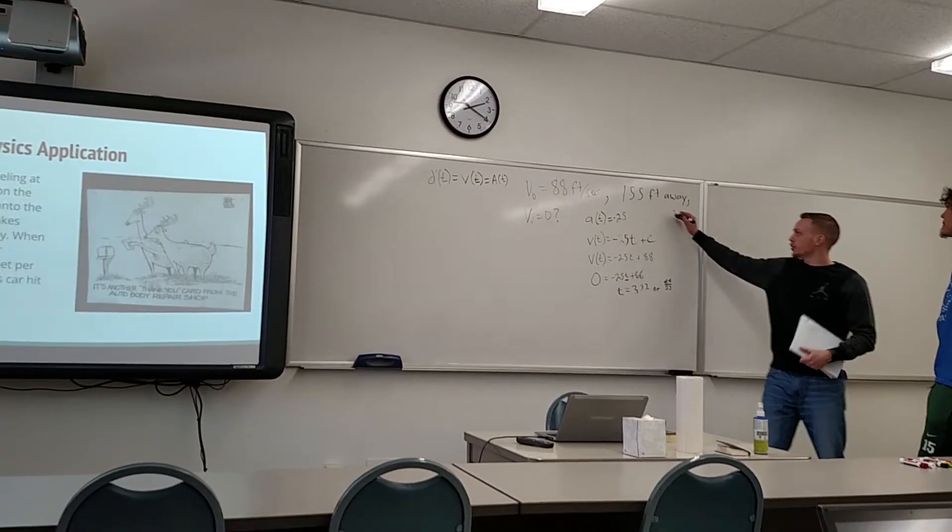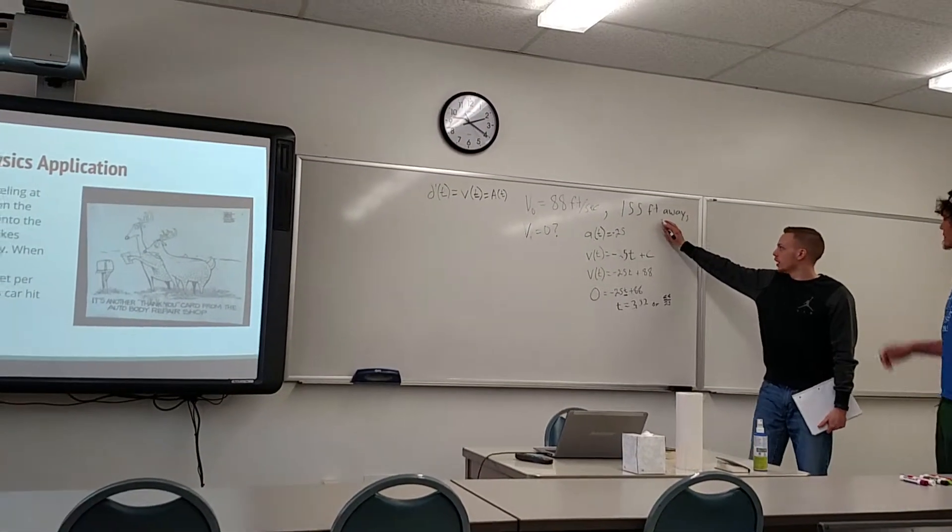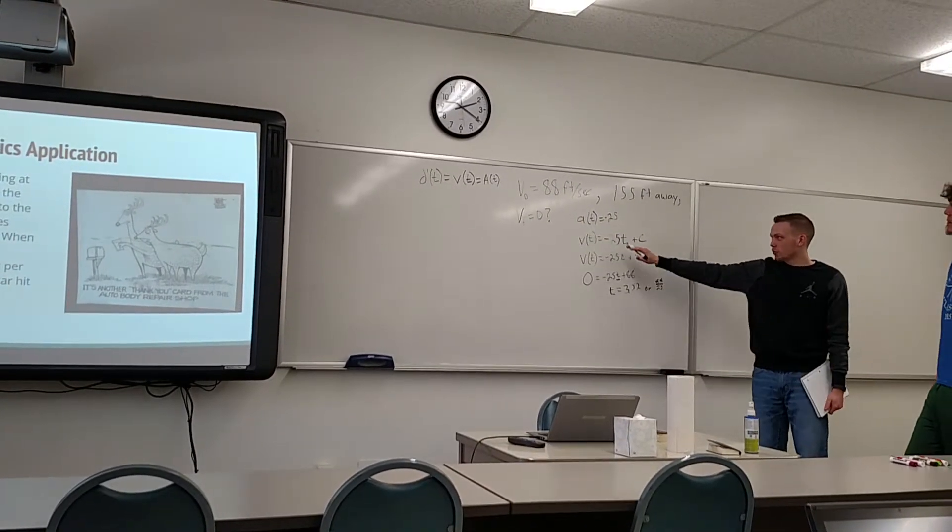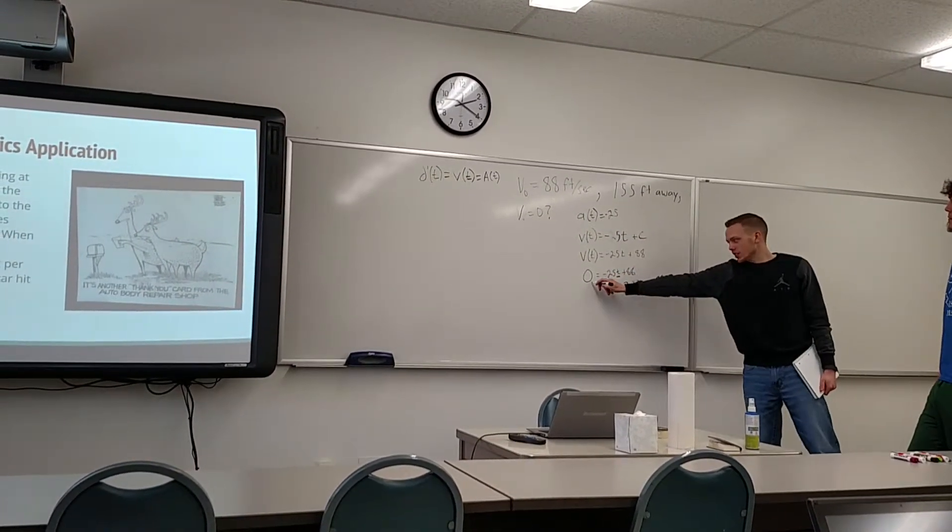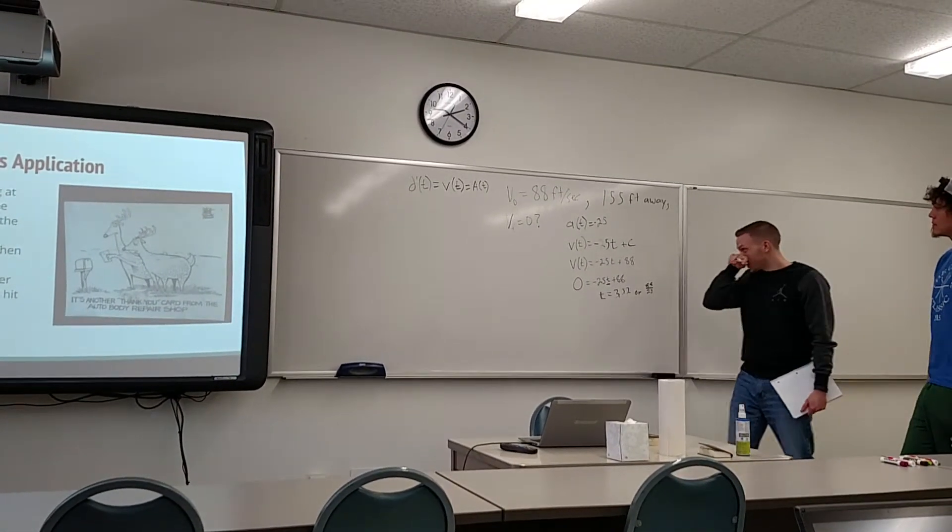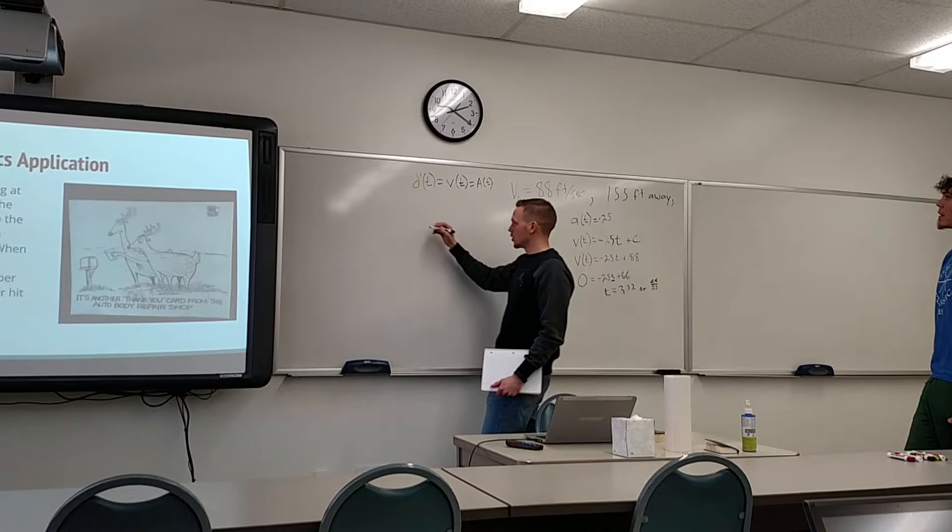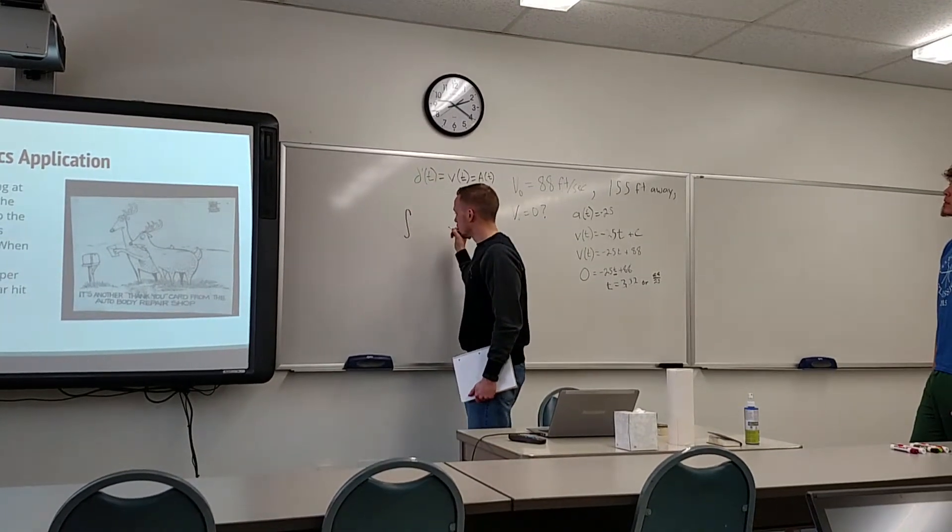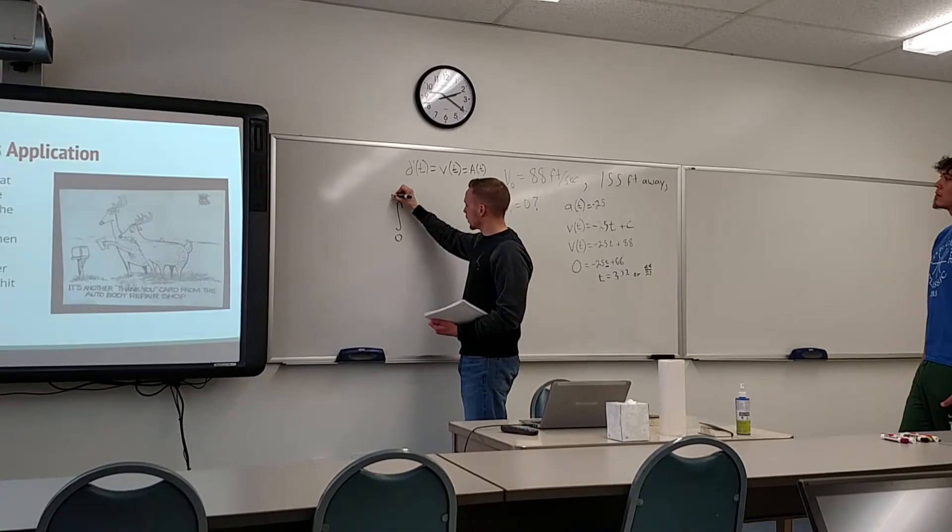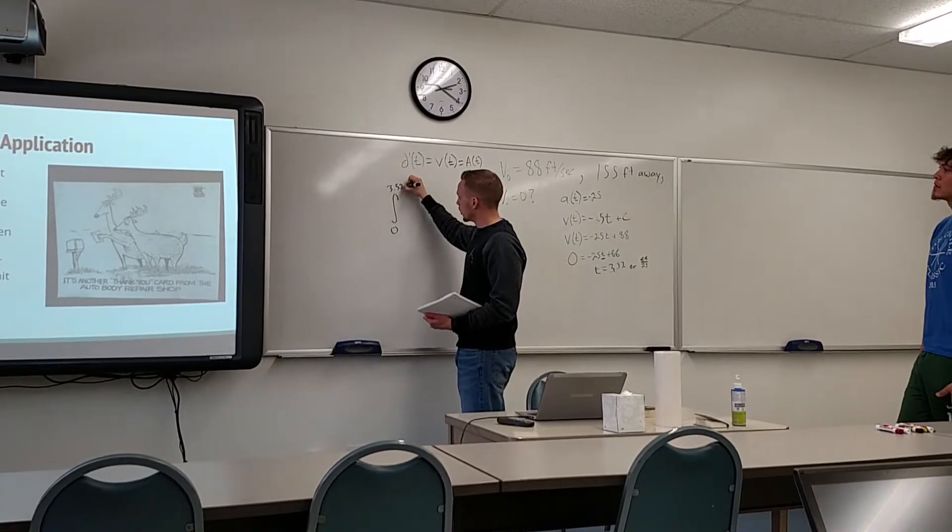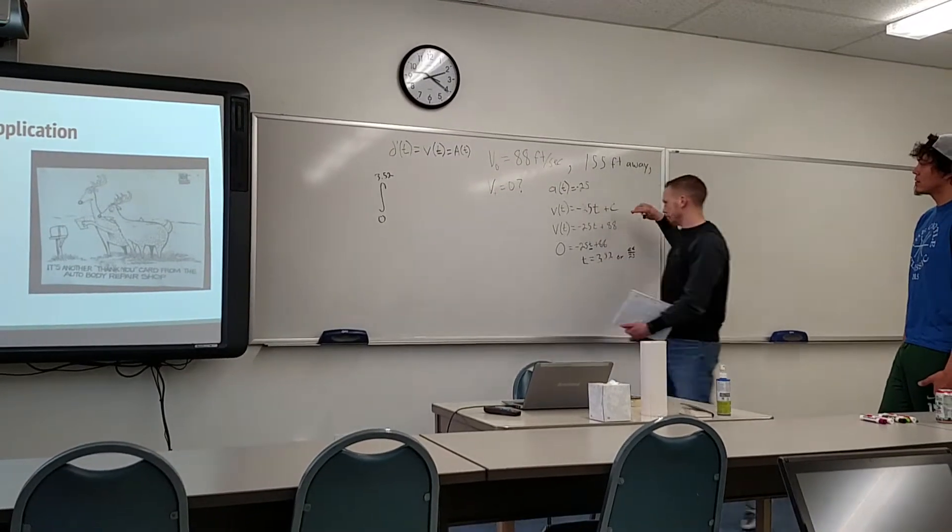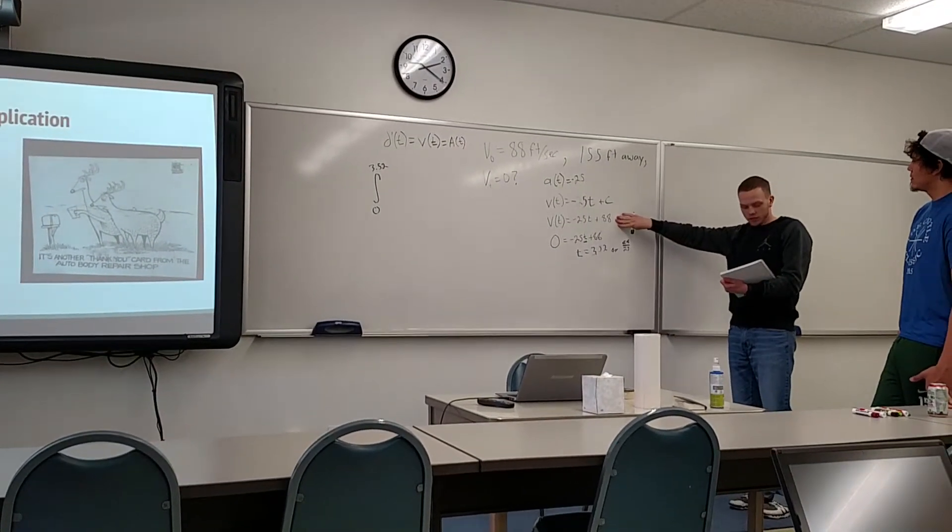So we know it's 155 feet away and that we're starting off at time equals zero, and when the car stops, when velocity is zero, the time is 3.52. So now what we can do is use integration from time equals zero to time equals 3.52 of our velocity function.